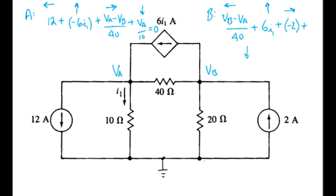Plus, right down here, the southbound current is VB over 20. And the sum of that equals zero.